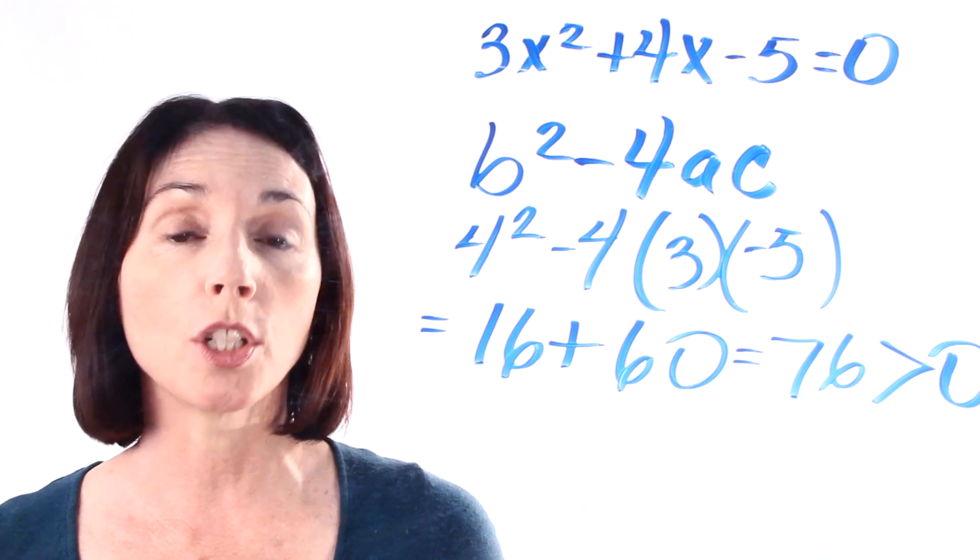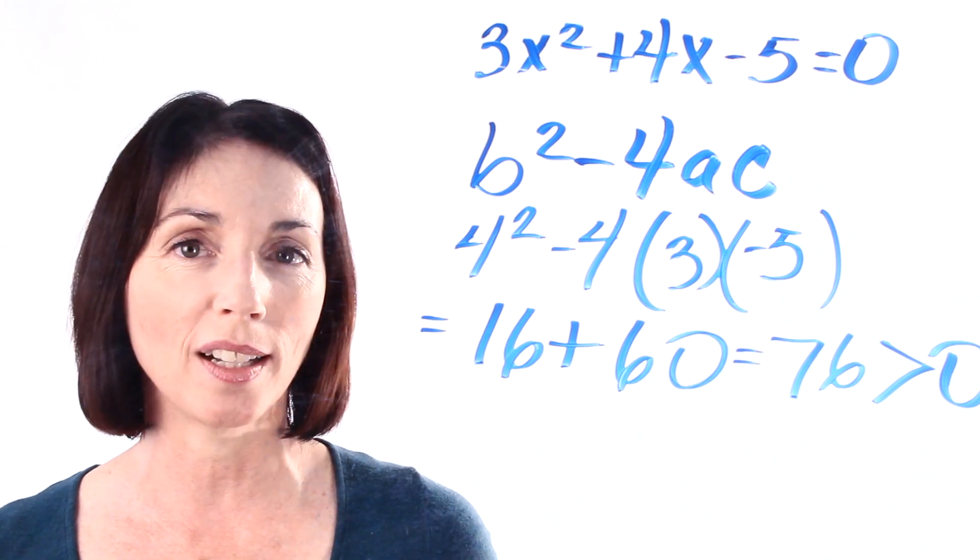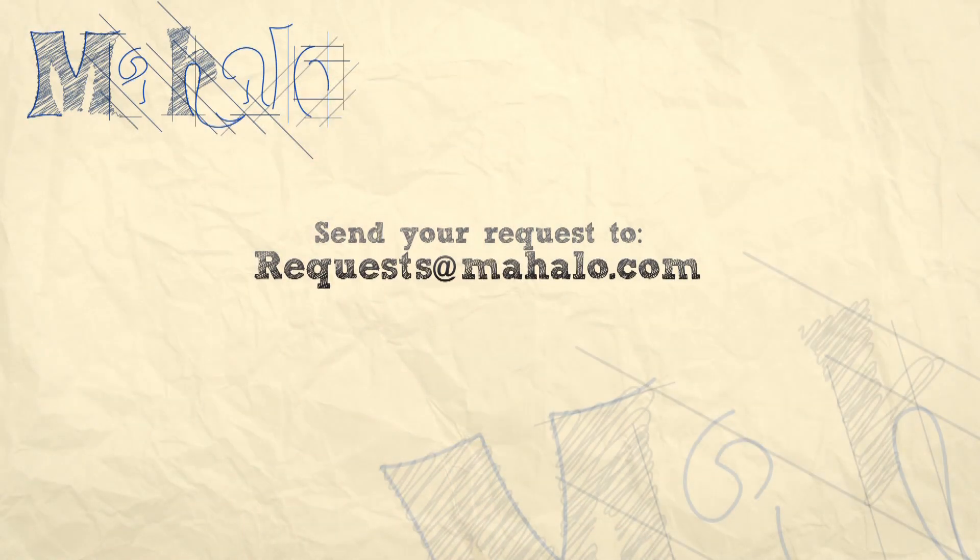That's how you use the discriminant to determine what kind of roots you have for a quadratic equation. Thanks for learning with me today. If you have any questions on this topic or anything having to do with math, please click on the links or send us a request to requests at mahalo.com. See you later.